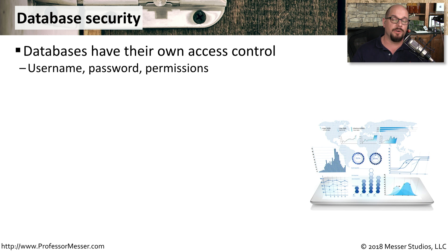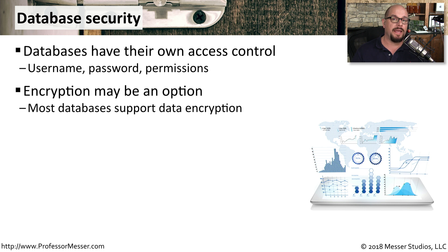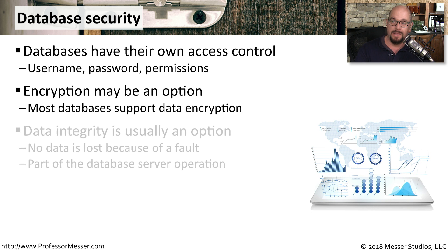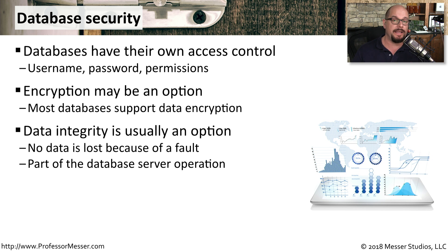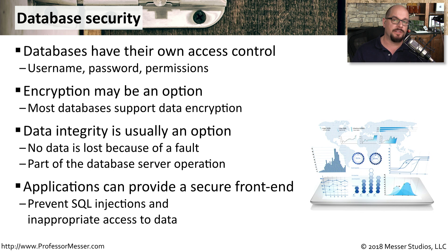If your organization has a database server, the databases themselves have their own type of access control, usually based around usernames, passwords, and a set of permissions for that database. Most database applications also include the ability to encrypt data — either the entire database or individual fields within the database itself. Many databases also include an option for data integrity, which prevents data from being lost due to a problem with the server or underlying hardware. The last line of defense for database security is a well-written application, which will prevent SQL injection attacks and other types of attacks to the data itself.